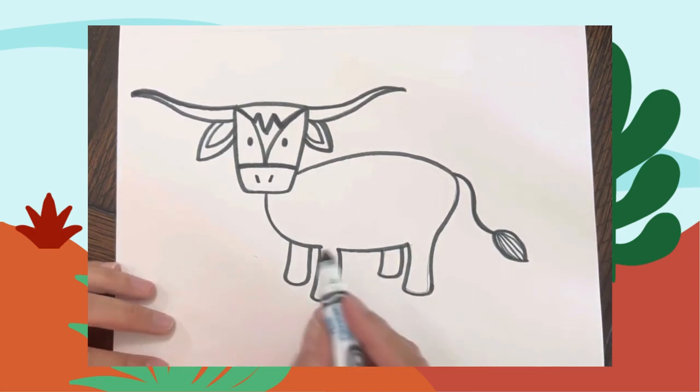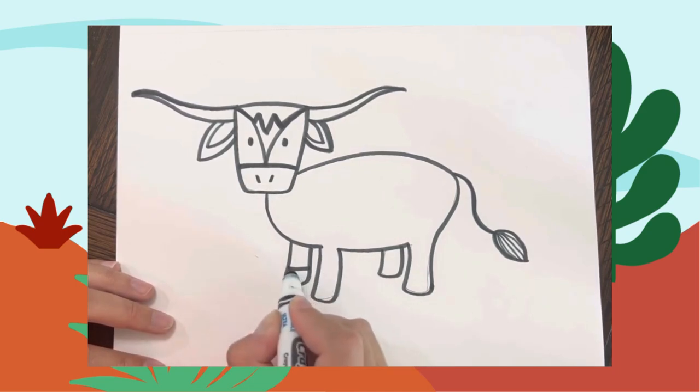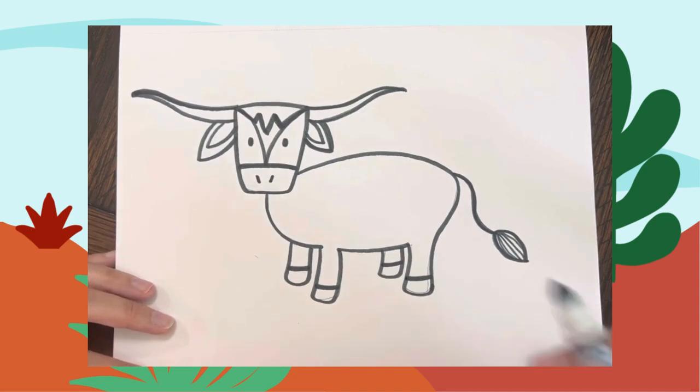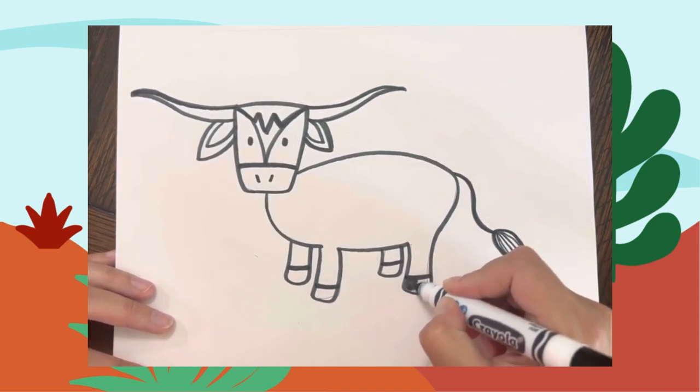We're going to add some hooves now. Make a line going across the bottom of each foot, and then we'll color them in. It's looking great.